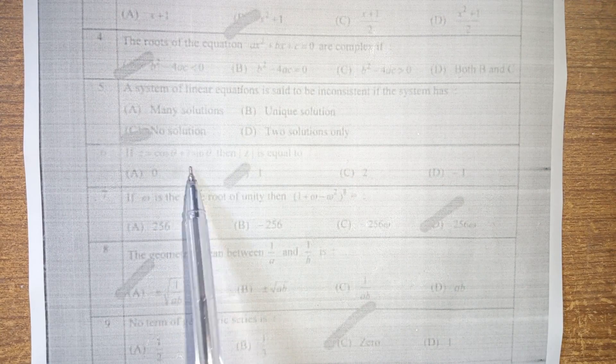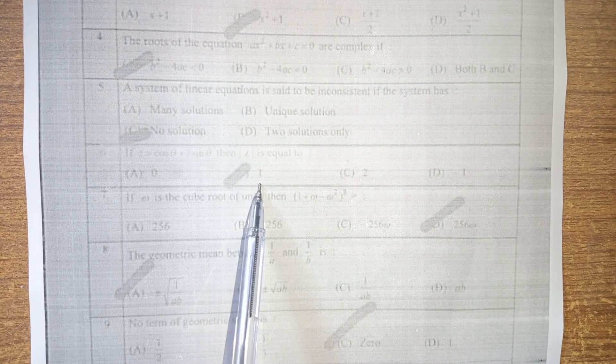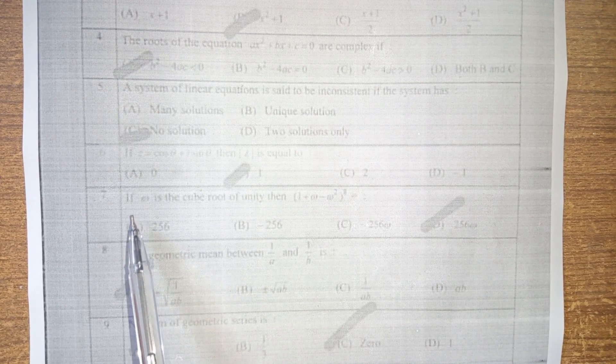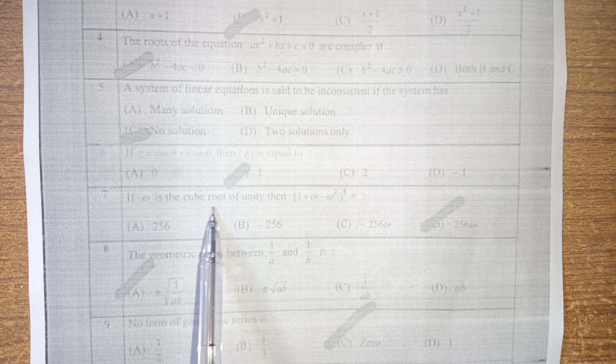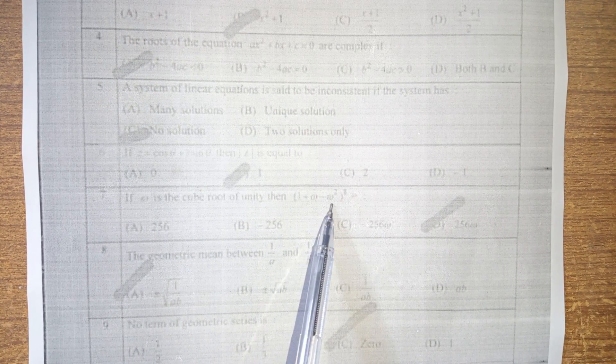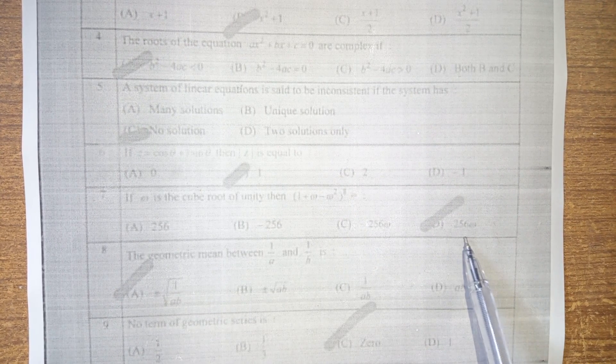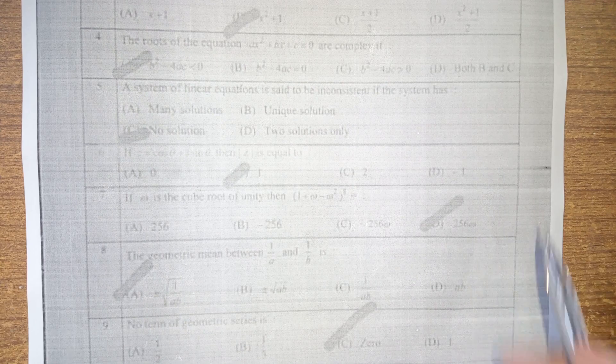If x is equal to cos theta, sin theta then 4 is equal to option b, 1. If omega is the cube root of unity then 1 plus omega plus omega squared is equal to x squared, whole square 8 is equal to 26 omega.